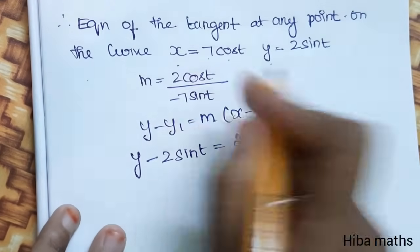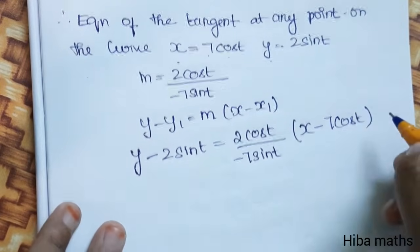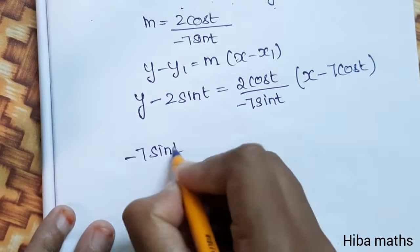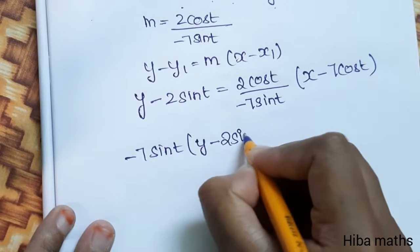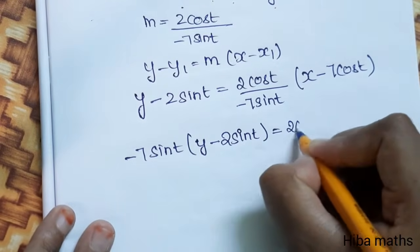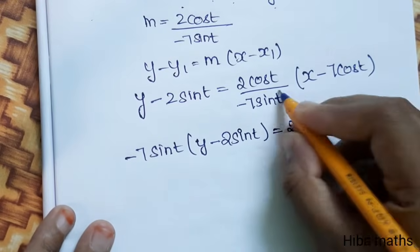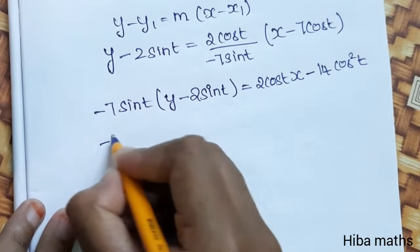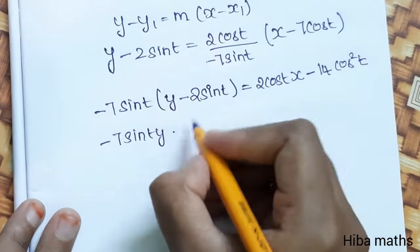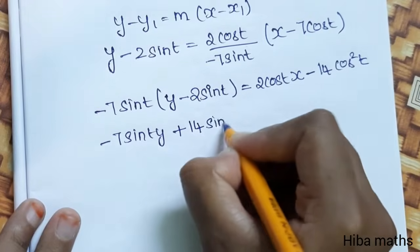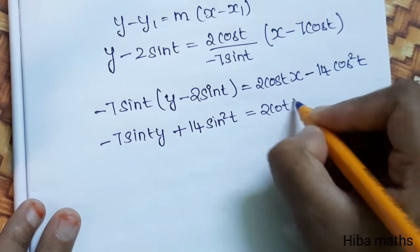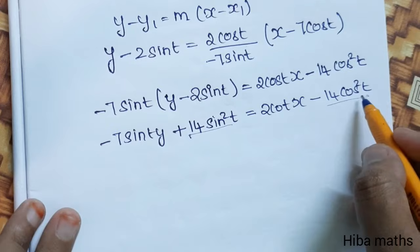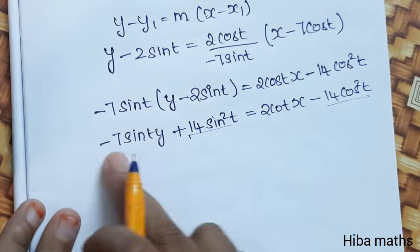y minus 2 sin t equals 2 cos t over minus 7 sin t, into x minus 7 cos t. Expanding and cross-multiplying: we get sin square t and cos square t terms on each side, which we add together.